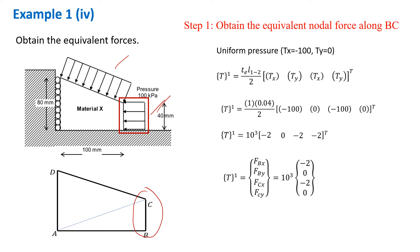The uniform pressure along edge BC is already in the global direction. Therefore, we can determine TX directly from the applied pressure: TX equals negative 100 kilo Pascal. TY equals zero, as there is no pressure in the Y direction. We substitute these values into the uniform pressure equivalent nodal force equation and obtain the equivalent nodal forces at nodes B and C.